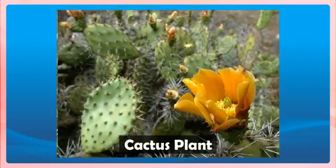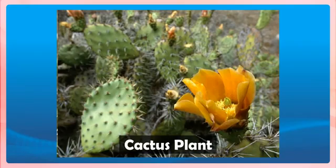Photosynthesis by plant parts other than leaves. Photosynthesis takes place mainly in the leaves of plants. In some plants, however, photosynthesis also takes place in other parts such as green stem and green branches. The green stem and green branches can do photosynthesis because they contain chlorophyll.